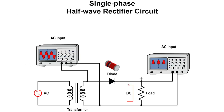The schematic shows a single-phase half-wave rectifier. The AC input is applied to the primary of the transformer, and the secondary voltage supplies the rectifier and load resistor. The anode side of the diode is positive during the positive half cycle of the AC input wave. The diode is forward biased, which acts as a closed switch during this time and conducts current to the load.